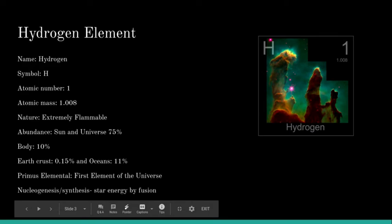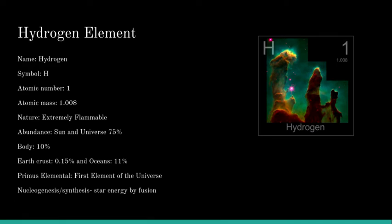So what is hydrogen? Hydrogen is an element with symbol H. It is the most abundant element in the universe, constituting about 75% of the sun and the universe. It's highly extremely flammable. It has an atomic mass of 1.008 and an atomic number of 1.